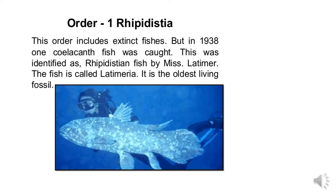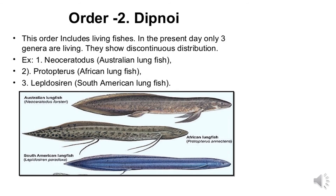This fish was identified by Miss Latimer and is called Latimeria — it is the oldest living fossil. You can see it in the picture. Order 2 Dipnoi includes living lungfishes. In the present day, only three genera are living and they show discontinuous distribution: Neoceratodus (Australian lungfish), Protopterus (African lungfish), and Lepidosiren (South American lungfish).